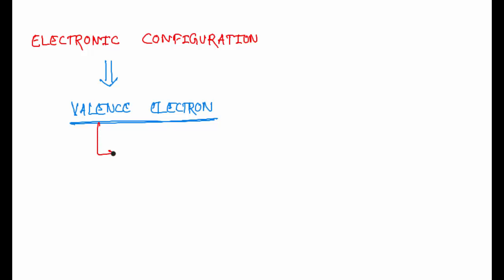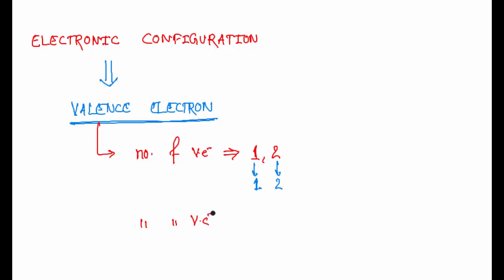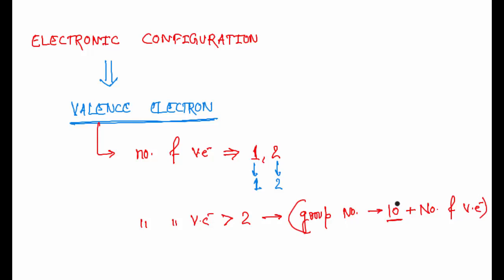If your number of valence electrons V is either 1 or 2, your group number will be the same — that is, for 1 valence electron the group number is 1, and for 2 valence electrons the group number is 2. But if the number of valence electrons is greater than 2, your group number will be 10 plus the number of valence electrons. We will see the logic behind this 10 also.